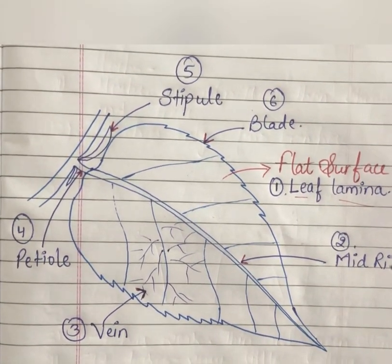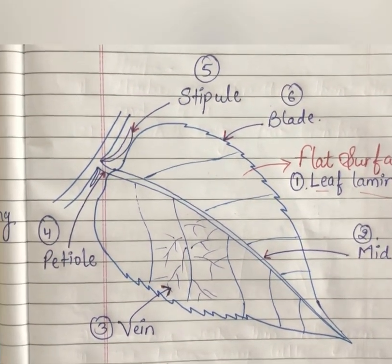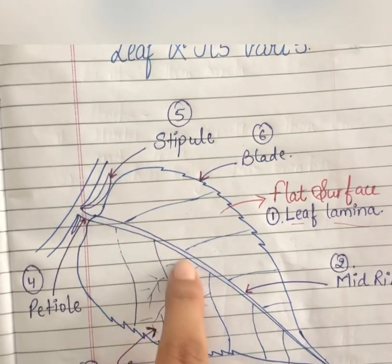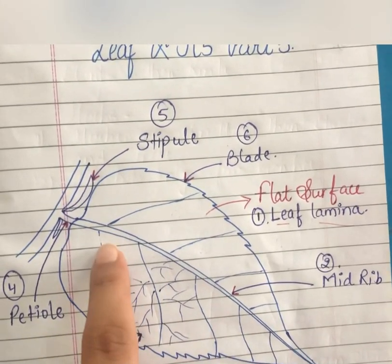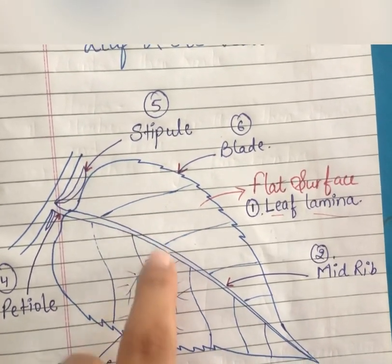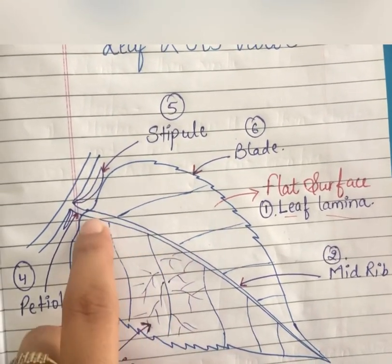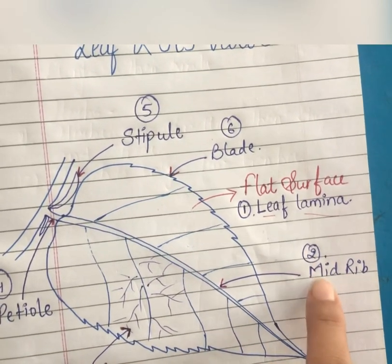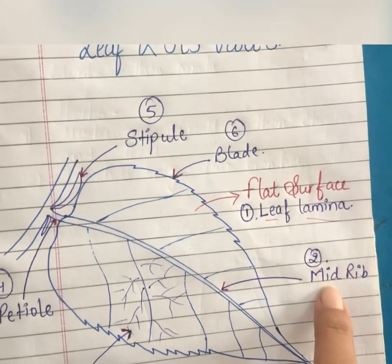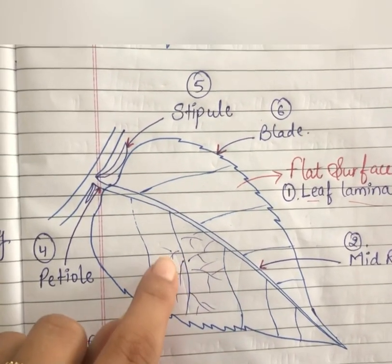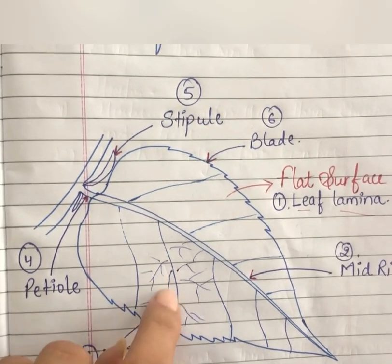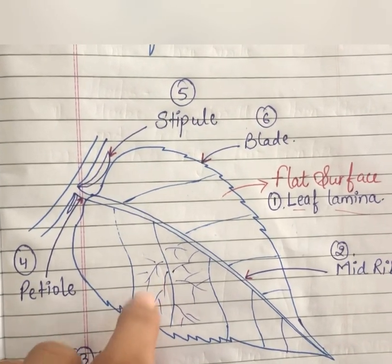Now, talking about this center line — the line which passes through the center and divides the leaf into two equal halves — we call it the midrib.